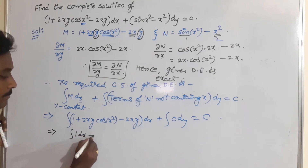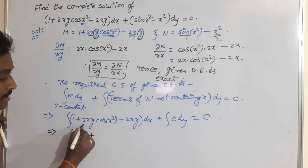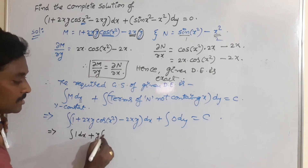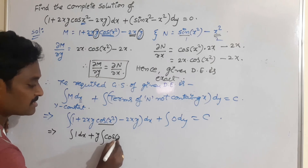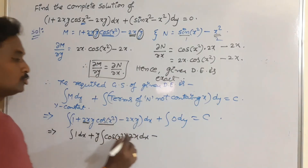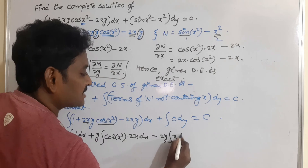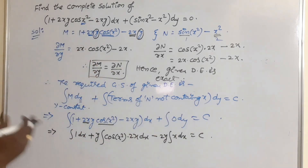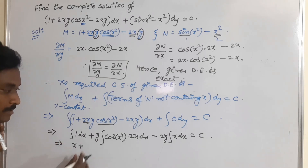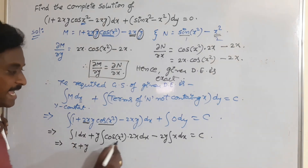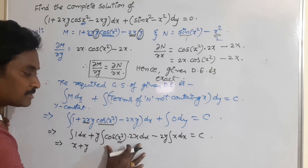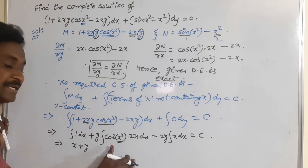Separate the terms first: ∫1 dx plus, observing that y is a constant term and 2 is also a constant term. Write cos(x²)·2x in the product: y·∫cos(x²)·2x dx. Minus 2y·∫x dx = c. Because integral of 0 is 0. Now, what is ∫1 dx? That is x. Then, by replacing x² = t, you will get 2x dx = dt. So automatically this part becomes ∫cos t.